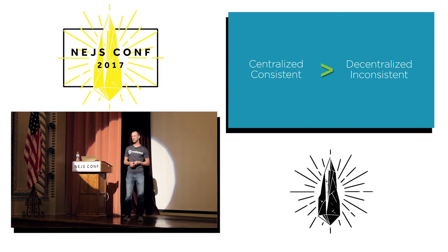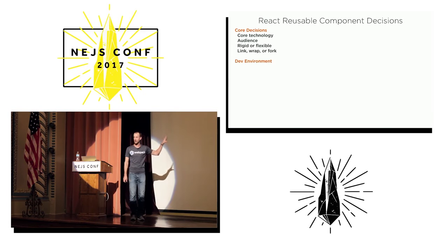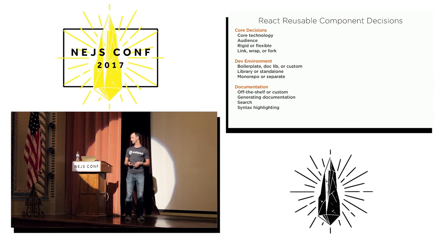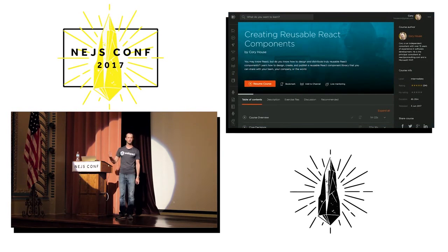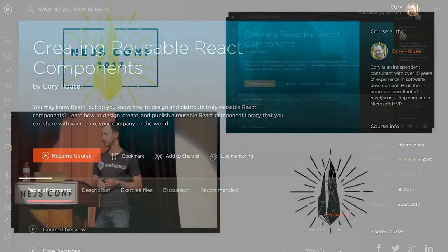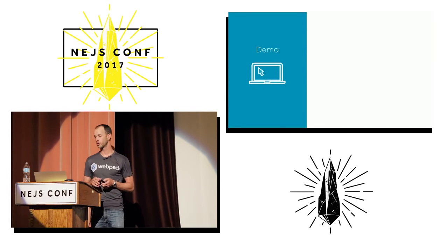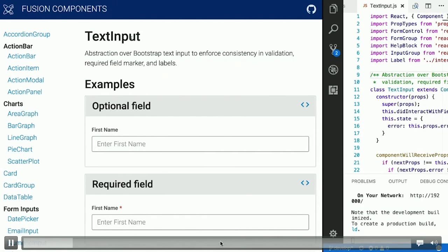Repeating yourself through copy and paste is not a design pattern that scales. Choosing a framework is just one of many decisions — there's a similarly long list of about 50 decisions when you create a reusable component library. I published a six-hour Pluralsight course called 'Creating Reusable React Components' — I thought I could get it done in two hours but it's a complicated conversation because there are 50 different decisions to consider. The patterns would apply just as well as an Angular or Vue developer. Don't build your docs by hand — automate that process.